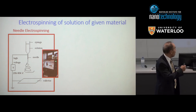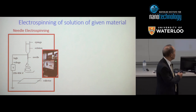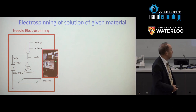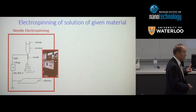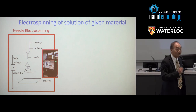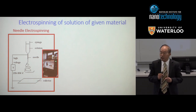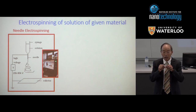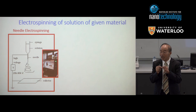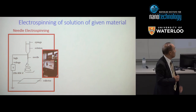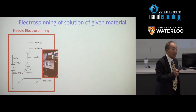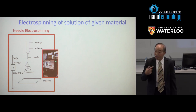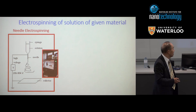That jet is not nanofibers — it's on the order of millimeters. But as it travels to the collector, two things make it thinner. Number one is evaporation of the solvents — humidity affects the nanofibers. The second thing is that charges deposited onto the jet cause repulsion, which elongates the fiber and makes it into nanofibers. By the time they get collected, you'll see nanofibers less than a thousand nanometers.